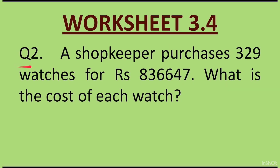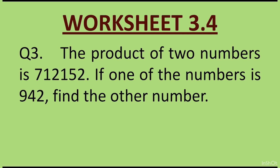Question 2: A shopkeeper purchases 329 watches for Rs. 836647. What is the cost of each watch? Question 3: The product of two numbers is 712152. If one of the numbers is 942, find the other number.